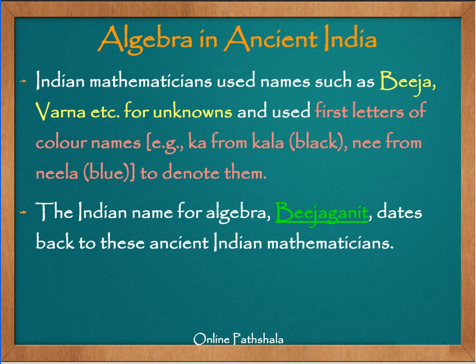The Indian mathematicians used names such as Beej and Varna for unknowns, and they used the first letter of colour names to denote the unknown variables. For example, they used the letter Ka from the word Kala in Hindi, which means black, and Ni from Neela, which stands for blue. The Indian name for algebra is known as Beej Ganith. Ganith means maths, and Beej is the name for the unknown that the Indian mathematicians used. This word was coined by the mathematicians we just discussed.